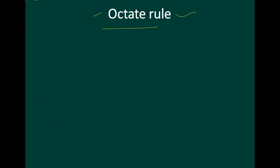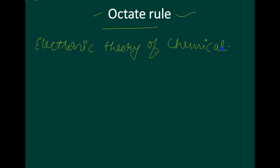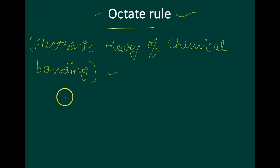Kossel and Lewis in 1916 developed an important theory of chemical combination between atoms, known as the electronic theory of chemical bonding — also called the octet theory. According to this, atoms can combine either by transfer of electrons from one atom to another, or by sharing valence electrons, in order to have an octet in their valence shell. This is known as the octet rule.